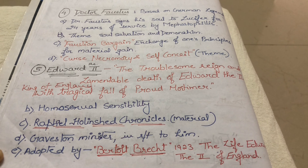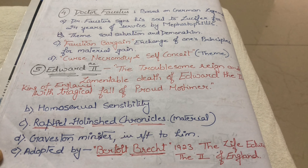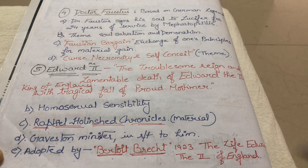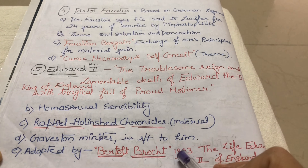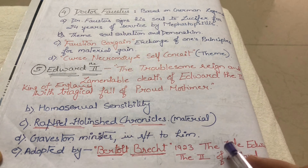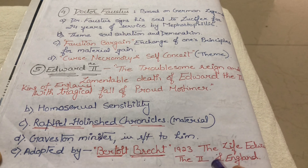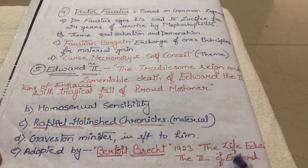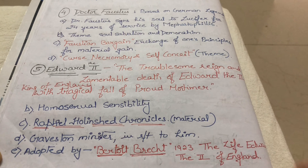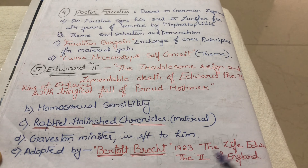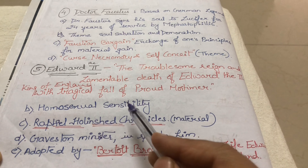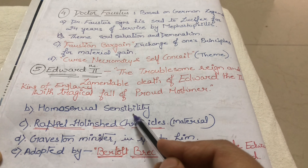The material for Edward II is drawn from Raphael Holinshed's Chronicle. This play was later adapted by Bertolt Brecht in 1923, who wrote The Life of Edward II of England. Homosexual sensibility is prominently shown in this play.